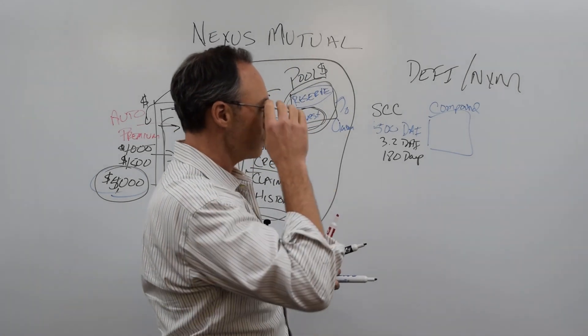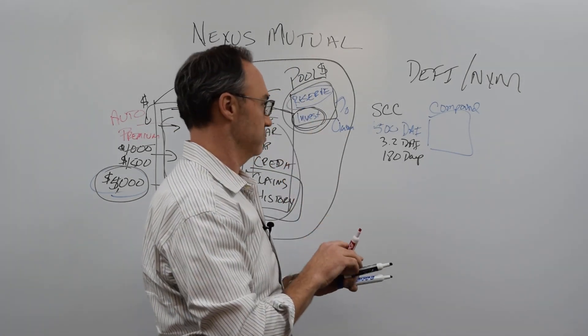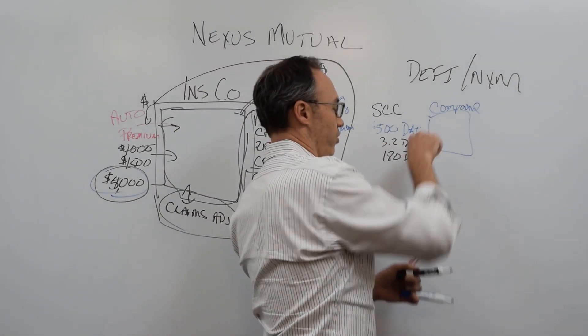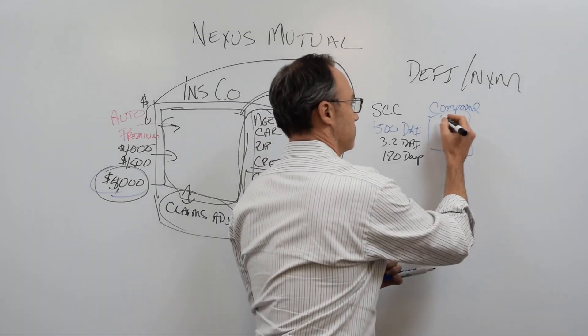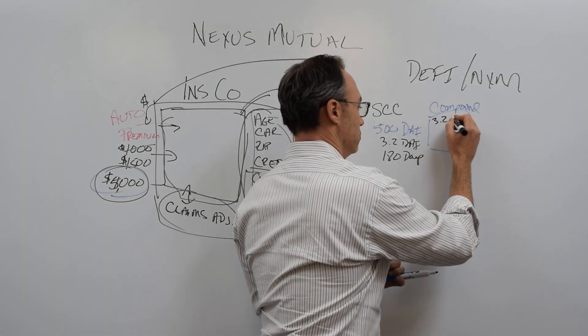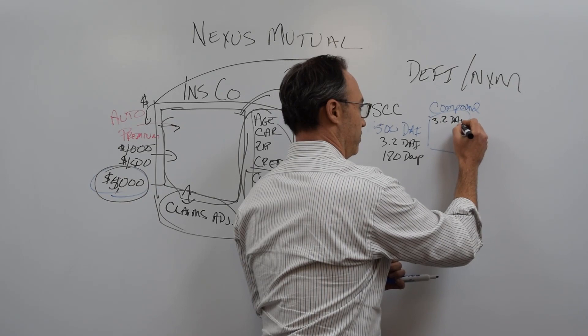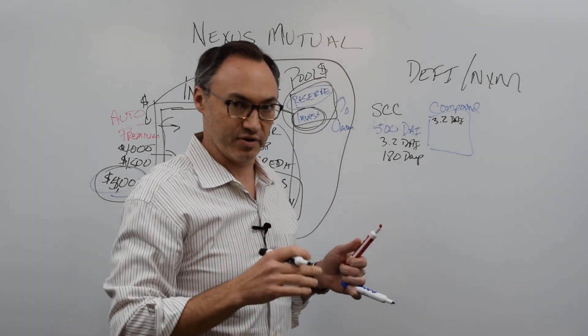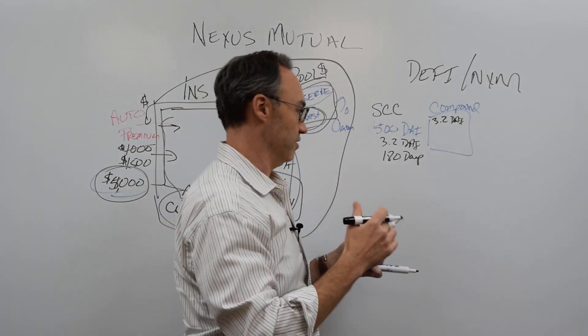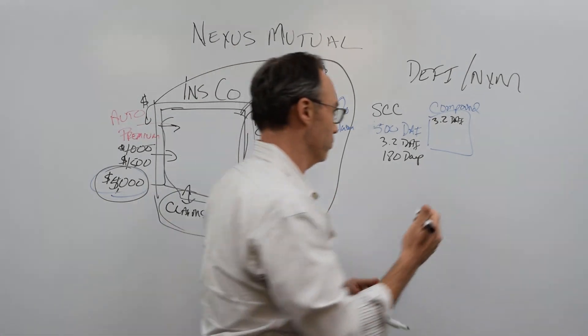So how does this all work? And how have they found the ability to do this? So my 3.2 DAI goes into here, into this pool. And forgive me if we don't get this exactly correct from a technical perspective, but we're trying to explain how it's all possible and why it's even important.